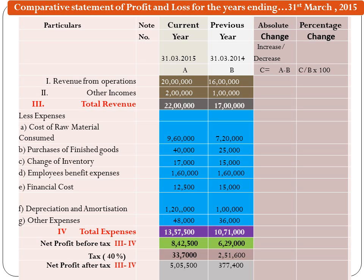Let us first focus on the format of Statement of Profit and Loss. The first item is Revenue from Operations. The second is Other Incomes, and the total is Total Revenue. The total of Expenses are going to be subtracted from Total Revenue.